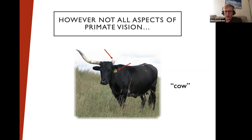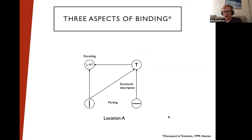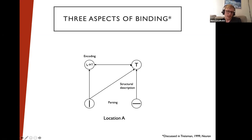In this group there have been discussions of capsule networks and their significance in vision, so I thought it useful to be specific about the distinction between what I'm describing and what capsule networks are aiming to solve. If you imagine this toy example of a T with vertical and horizontal bars, there are actually multiple aspects to binding. Anne Treisman — a major figure in the binding literature — described these as encoding, structural description, and parsing. Parsing is just selecting what low-level features compose an object, and structural description captures how the spatial relations between features tell us it's a T rather than an L.